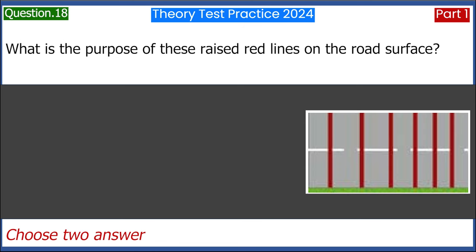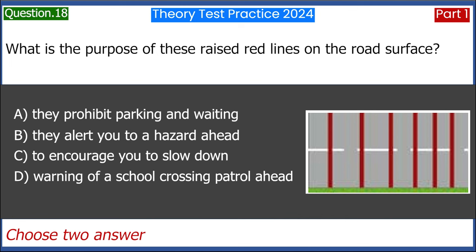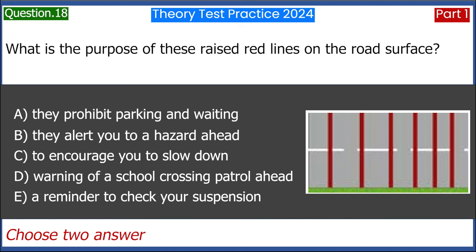What is the purpose of these raised red lines on the road surface? A. They prohibit parking and waiting. B. They alert you to a hazard ahead. C. To encourage you to slow down. D. Warning of a school crossing patrol ahead. E. A reminder to check your suspension. Answer: B and C.